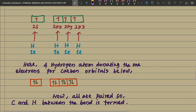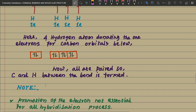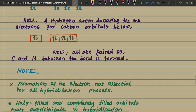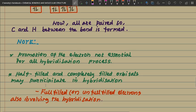Now, four hydrogen atoms each donate one electron to carbon's orbitals. Each hydrogen electron fills one of carbon's unpaired orbitals. So now all orbitals are paired, and a bond is formed between carbon and hydrogen — this is called methane. Note: promotion of electrons is not essential for all hybridization processes.